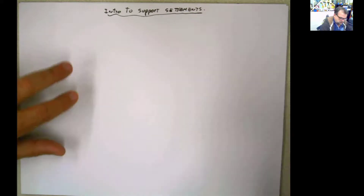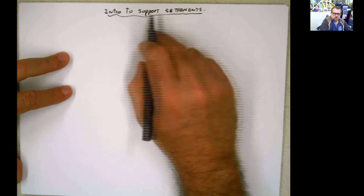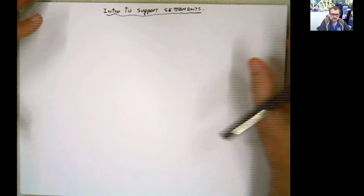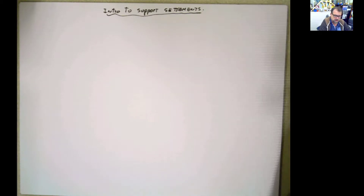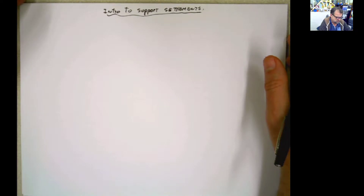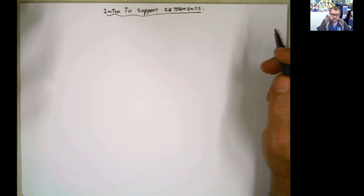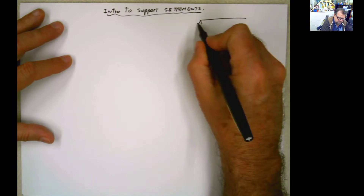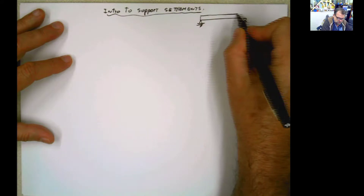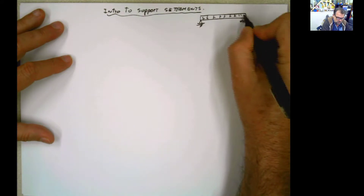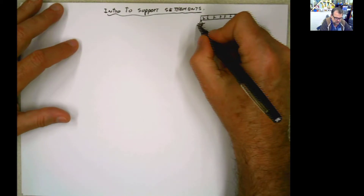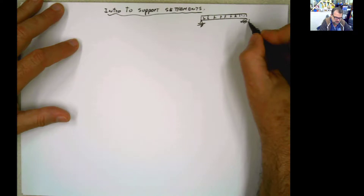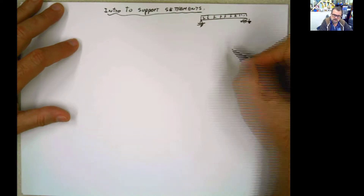Today we're going to start talking about support settlements — what happens when you have a structure and the support suddenly suffers displacement for any reason. You can have a clay layer that hasn't been consolidated yet, or you can have lack of compaction. Let's see what happens if you have a structure subject to a load and suddenly one or both supports settle by a certain small displacement.